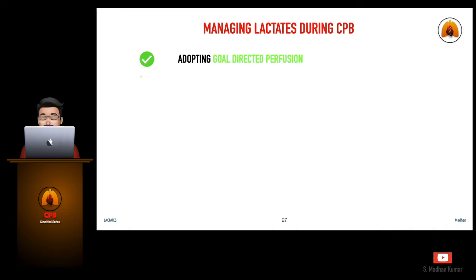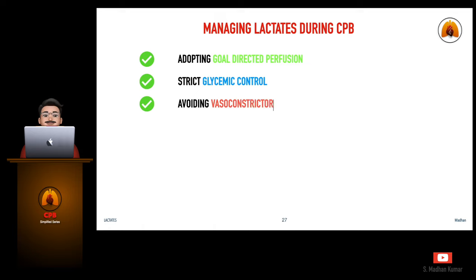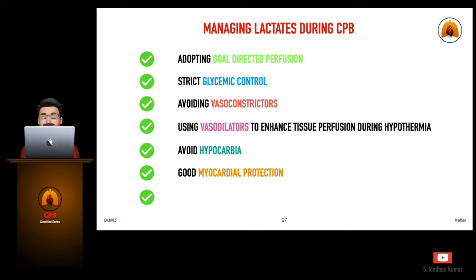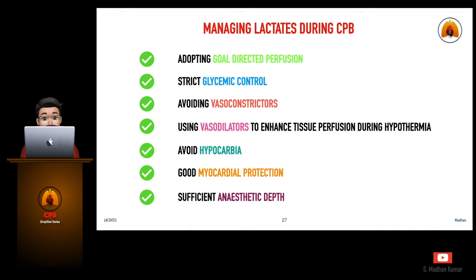To avoid elevated lactates during CPB, we should adopt goal directed perfusion, maintain strict glycemic control, avoid vasoconstrictors at any point during cardiopulmonary bypass, use vasodilators to enhance tissue perfusion during hypothermia, avoid hypocarbia, maintain good myocardial protection, and give sufficient anesthetic depth and muscle relaxation. Perfusing is not just about showing numbers on the monitor — it is our duty to ensure the patient is well perfused and managed during the intraoperative period.